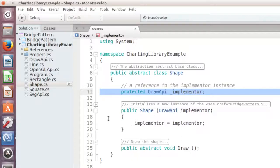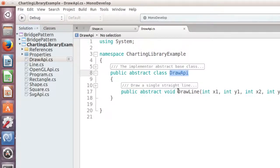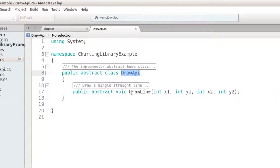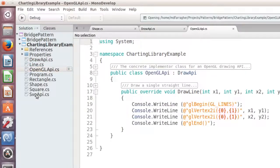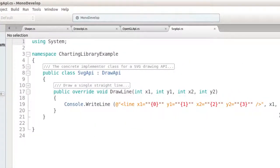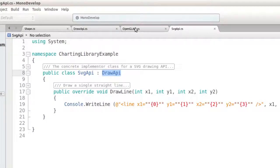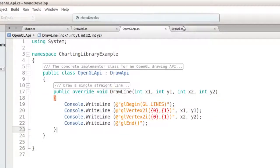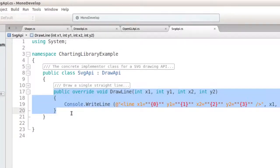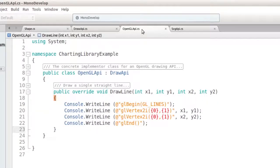Before I move on to the concrete shape classes, let's first take a look at the API classes. Here is the draw API class. You can see that it is an abstract class that sets up a single abstract draw line method. And here are two concrete API classes, SVG API and OpenGL API. Each class inherits from draw API and implements the draw line method. You can see here that I am outputting the actual SVG and OpenGL commands to draw a line. This is where you would put the actual implementation code to draw a line.